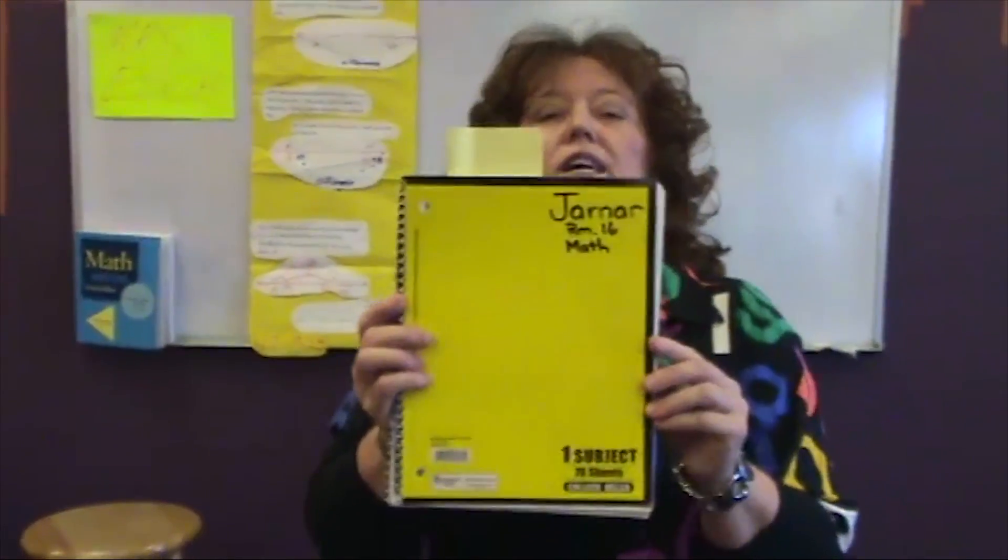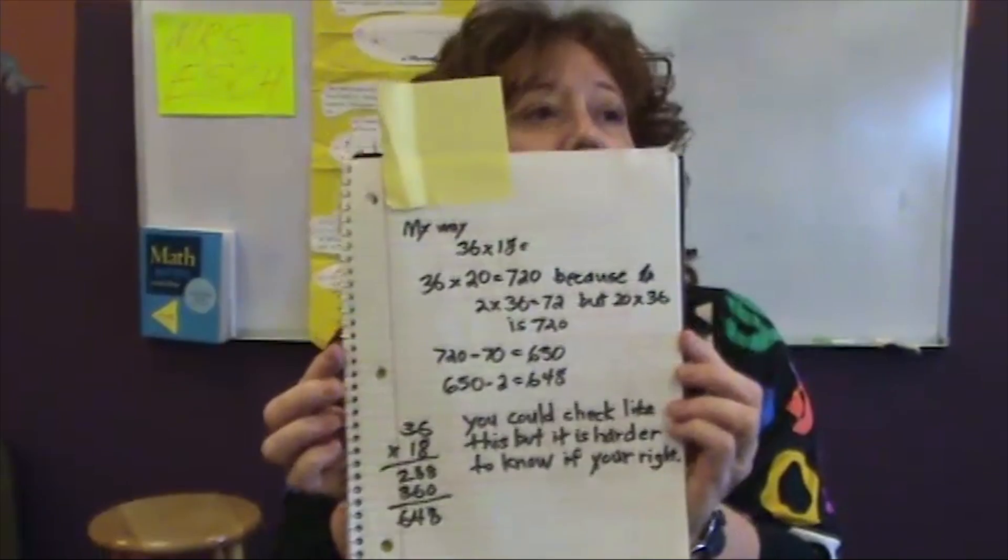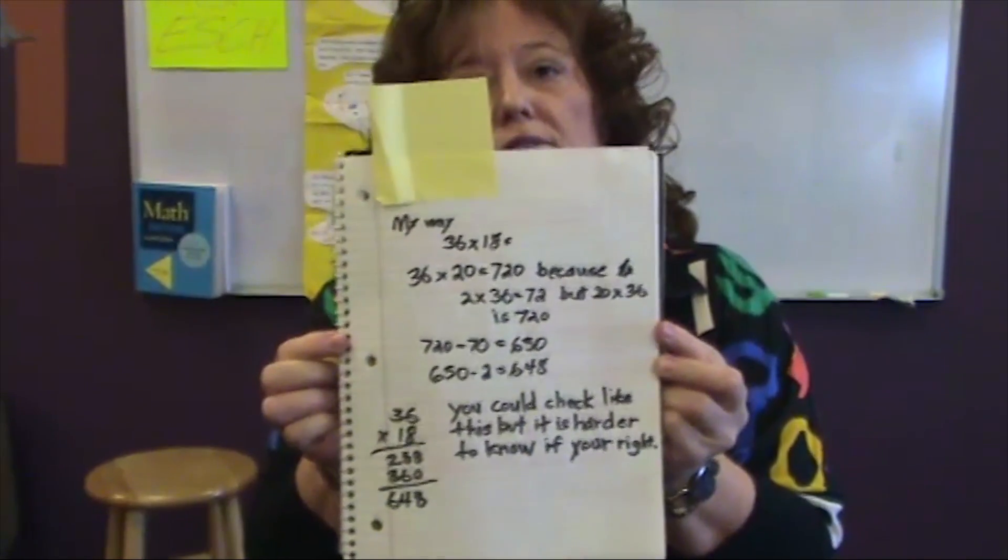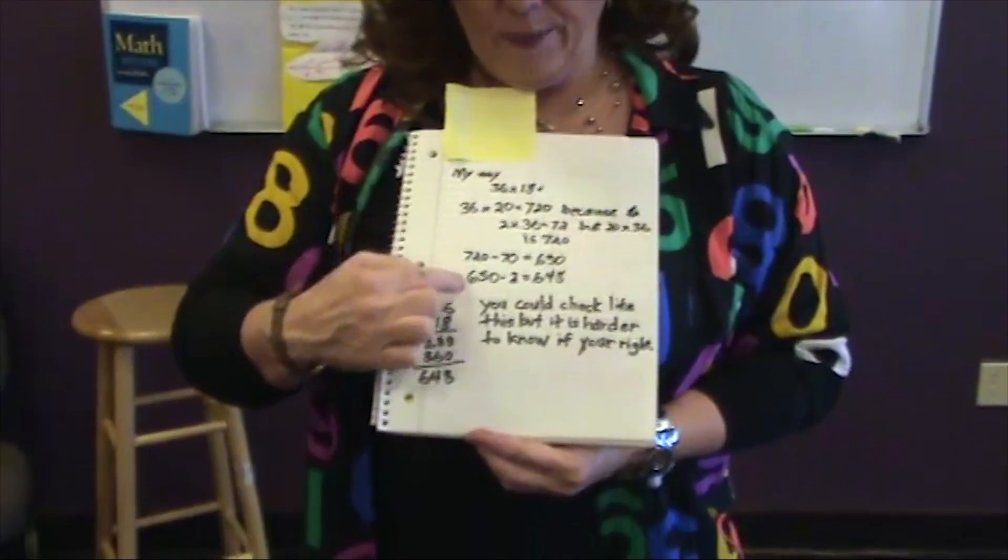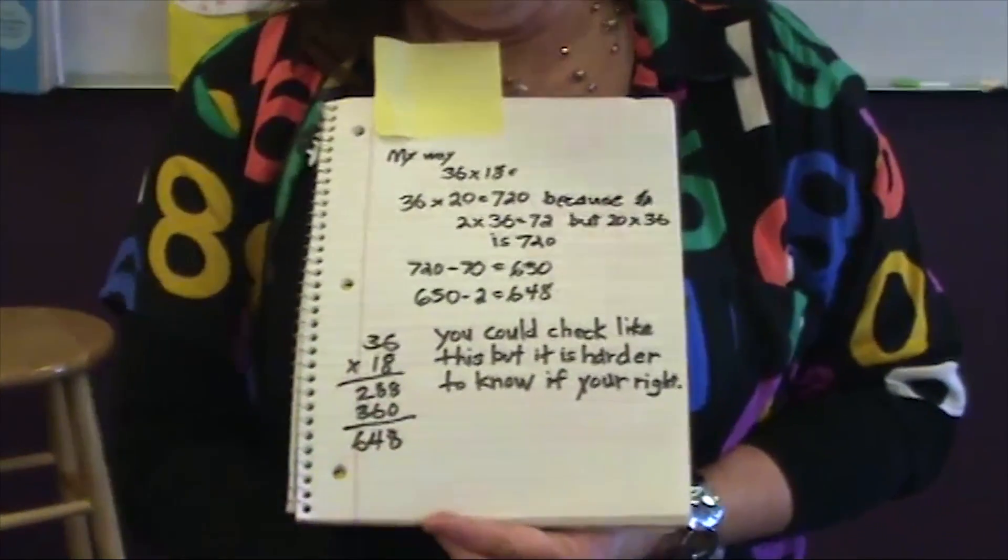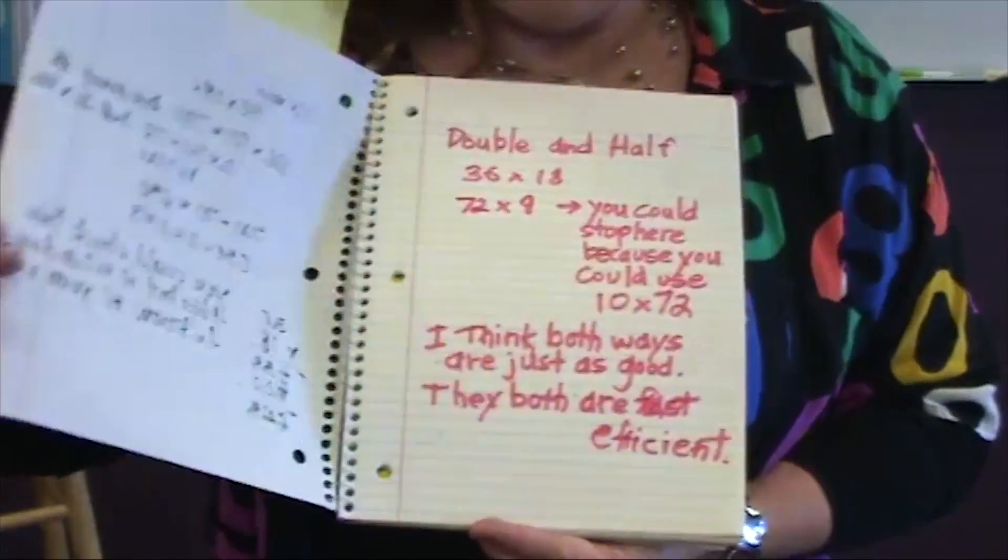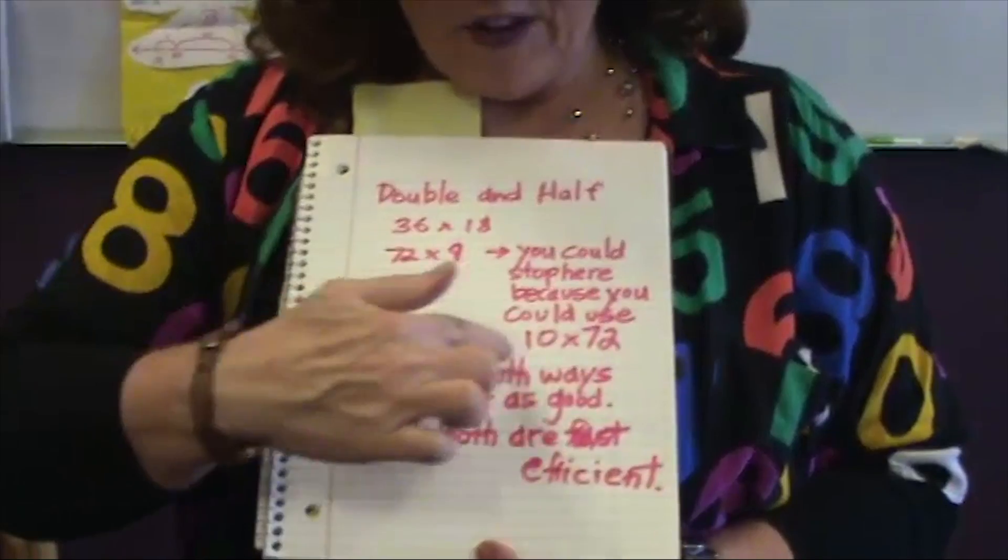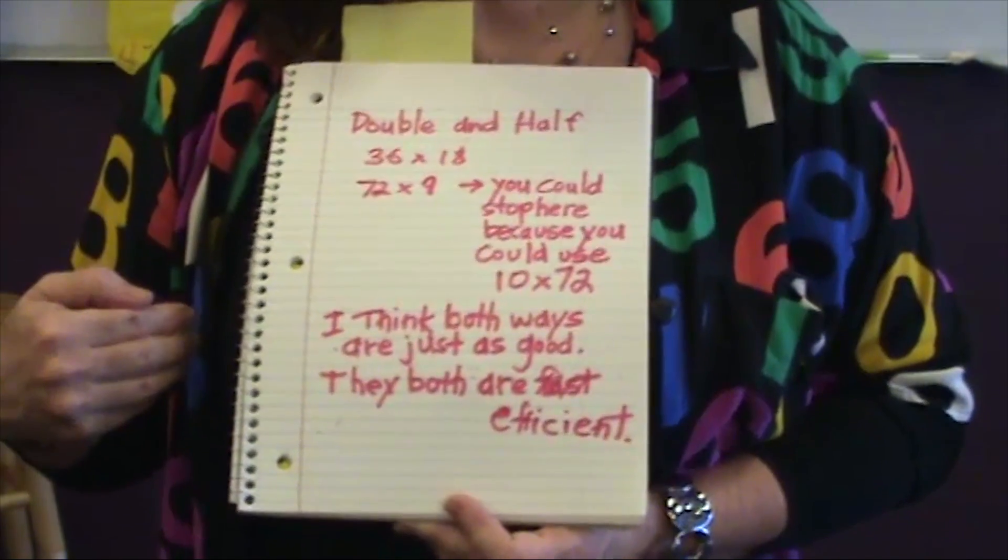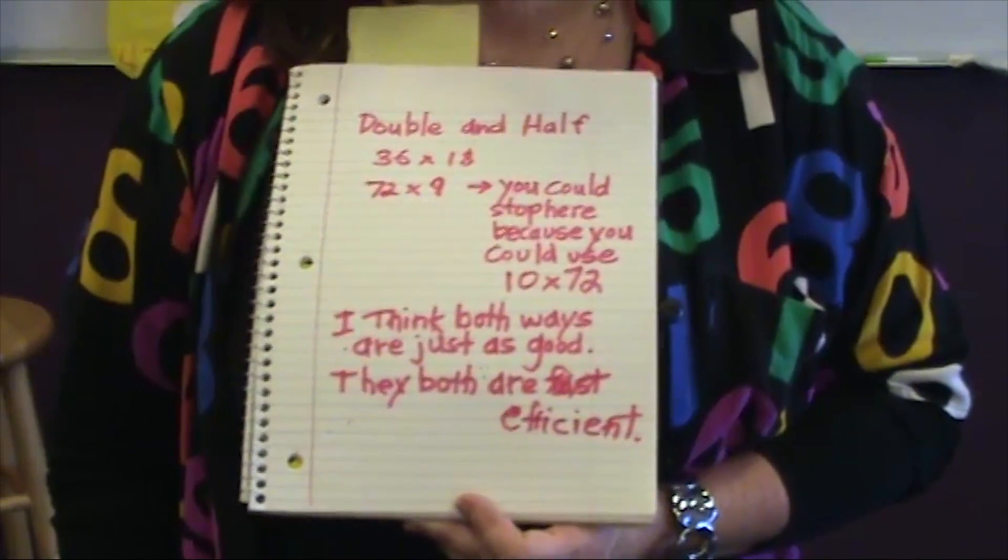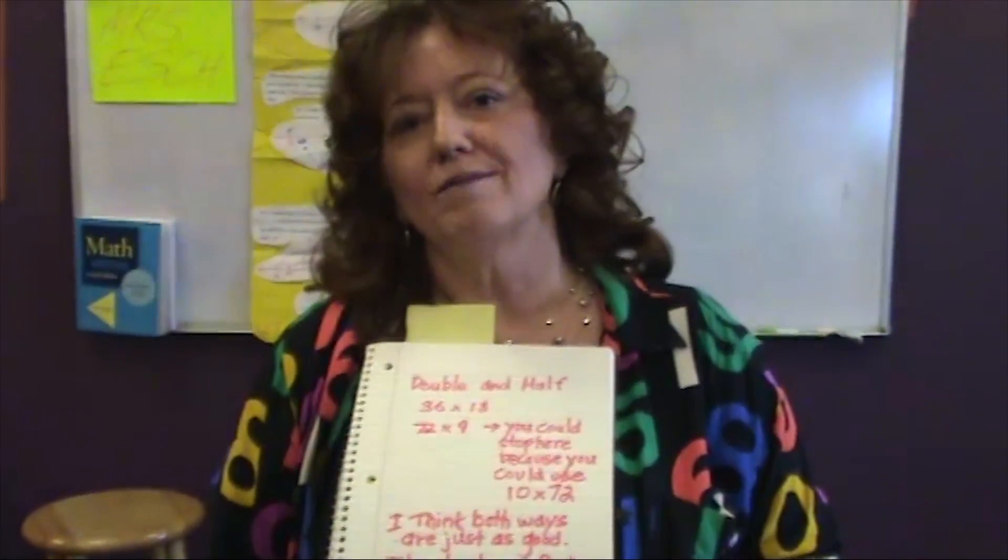Here is a sample of fifth grade Jamar. His writing is about 36 times 18. He had to show it in two ways. His way and any other way he chose. So as you notice, Jamar wrote about one way, about the one method he used, and showed even a paper and pencil way to check it. But then on the second page, he shows an alternative way to do it, and even makes comments about what he thinks about the two ways. This is a way to incorporate writing into number talks. You may even skip the number talk that day in order to have time to do this, but not have them write during the number talk group session. Thanks.